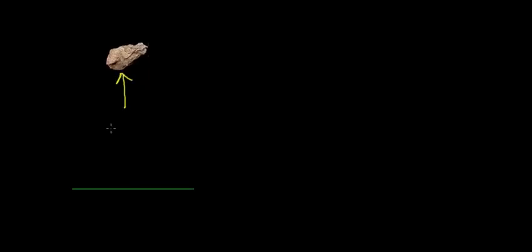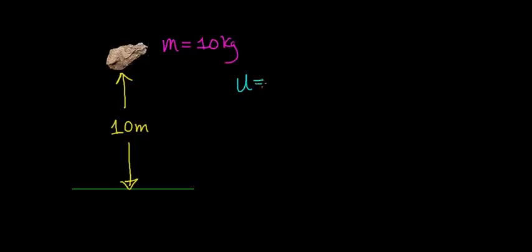So this is going to be a simple example. We're going to have some rock, and this rock is going to be a distance of 10 meters above the Earth's surface — that is, it's going to be able to fall a total distance of 10 meters if we were to let it go. If this rock has a mass of 10 kilograms, we can find out how much potential energy this rock has using the relationship: gravitational potential energy equals the mass of the object times the gravitational acceleration times the height that object is above the Earth's surface.